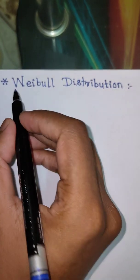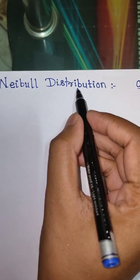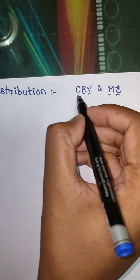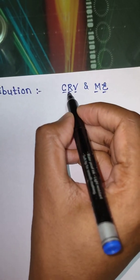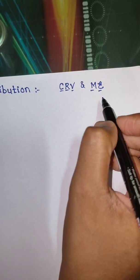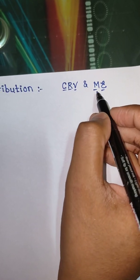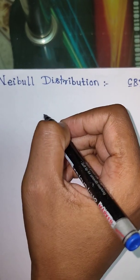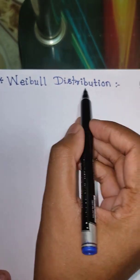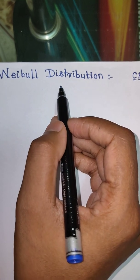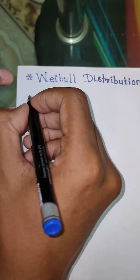Hello everyone, my name is Atish and the topic of this learning video is Weibull distribution. Before we start with the definition, I would suggest you go and study continuous random variables and mathematical expectation. These two definitions are essential to learn Weibull distribution. In this video we will cover the definition first and then an example based on the properties of Weibull distribution. So let us start with the definition.